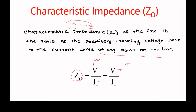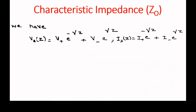Now we will find the expression for the characteristic impedance of the transmission line. We have: Vs(z) = V⁺ e^(−γz) + V⁻ e^(+γz), and Is(z) = I⁺ e^(−γz) + I⁻ e^(+γz). We will substitute these into the coupled equation.